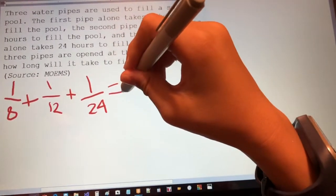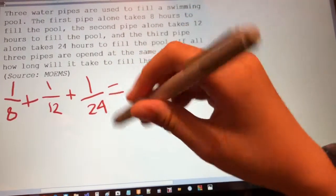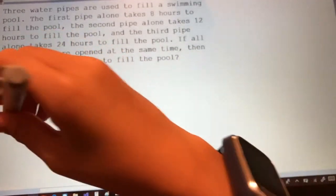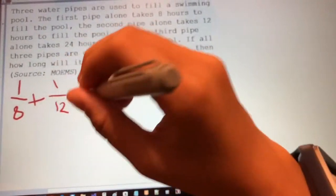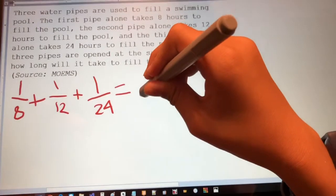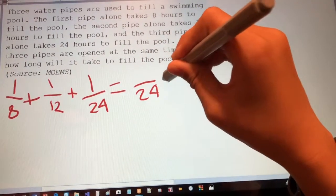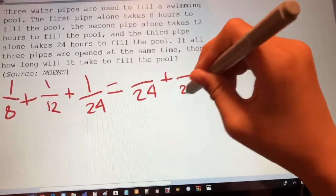Now we're going to find a common denominator, and the common denominator here is 24, since 8 times 3 is 24, and 12 times 2 is 24. So put a common denominator of 24.